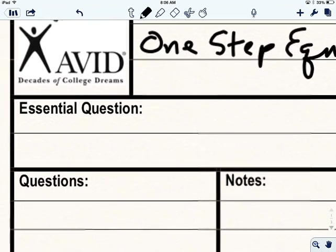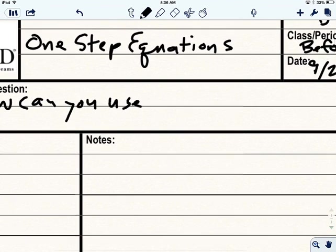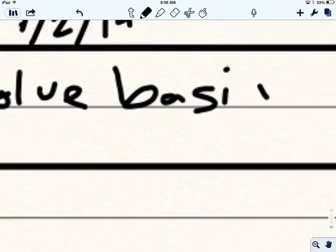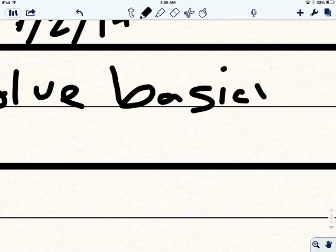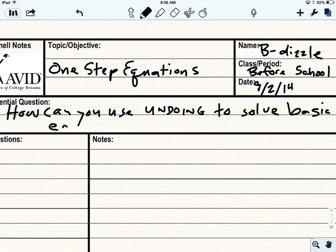So our essential question is, how can you use undoing to solve basic equations? I'm going to write it large.